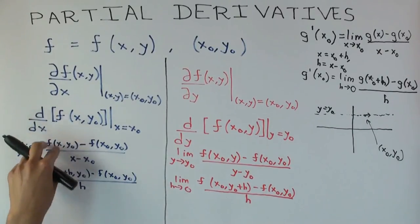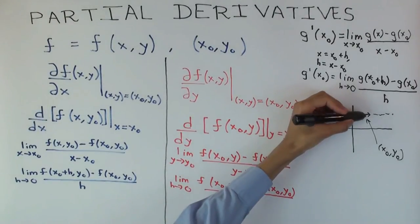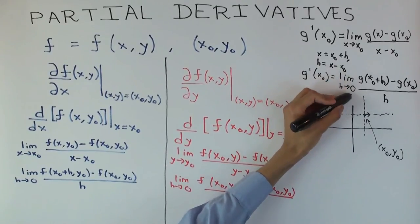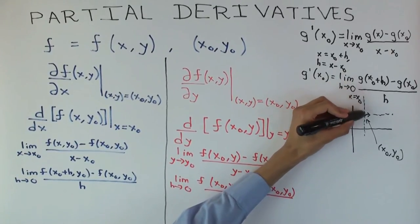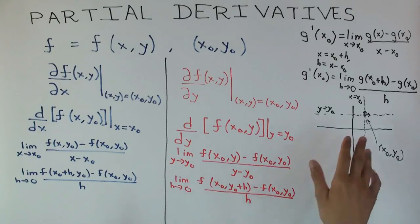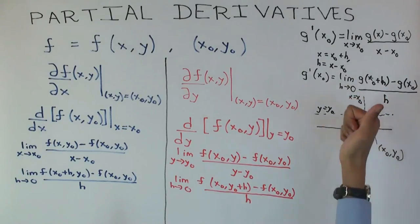Similarly, you can go vertically. The vertical line is x equals x naught. If you make a slight move here, that's going to give you the y partial derivative. If you want to actually make the graph of this function, you'd have to do it in three dimensions.